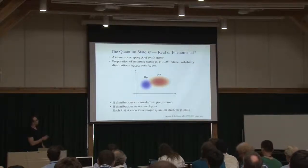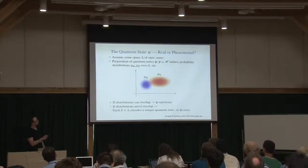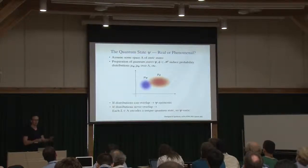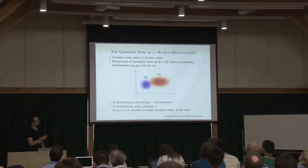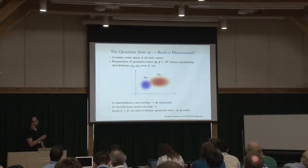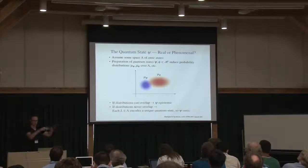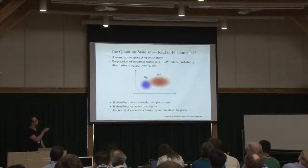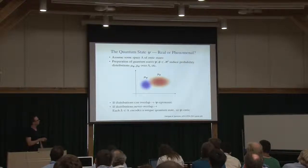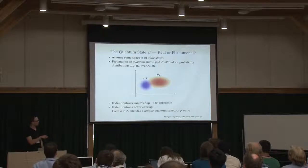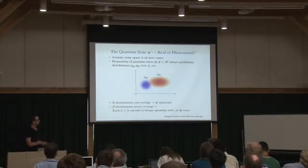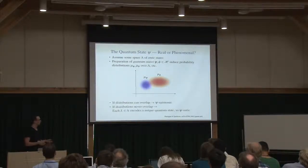So what people do is assume that there is some space of underlying physical states. And that when quantum states are prepared, they merely induce probability distributions over this underlying space of ontic physical states. And so a definition that was formalized by Harrigan and Spekkens would say that such distributions are epistemic.